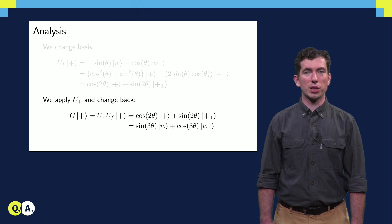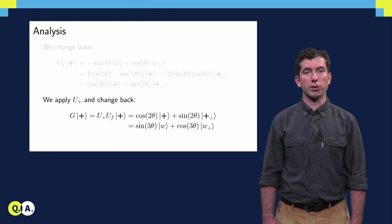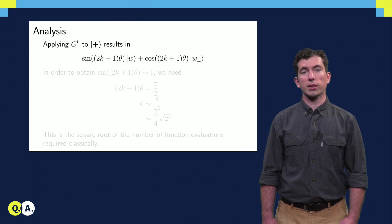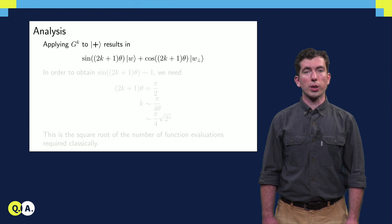Applying U plus and changing the basis back, we can see that the Grover iterate takes our initial angle theta and replaces it with the angle 3 theta. If we did this k times in a row, we'd end up with not 3 theta, but 2k plus 1 theta.